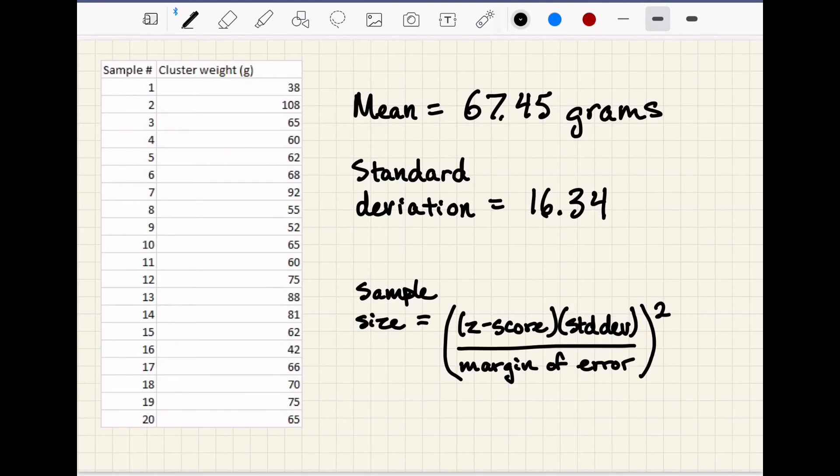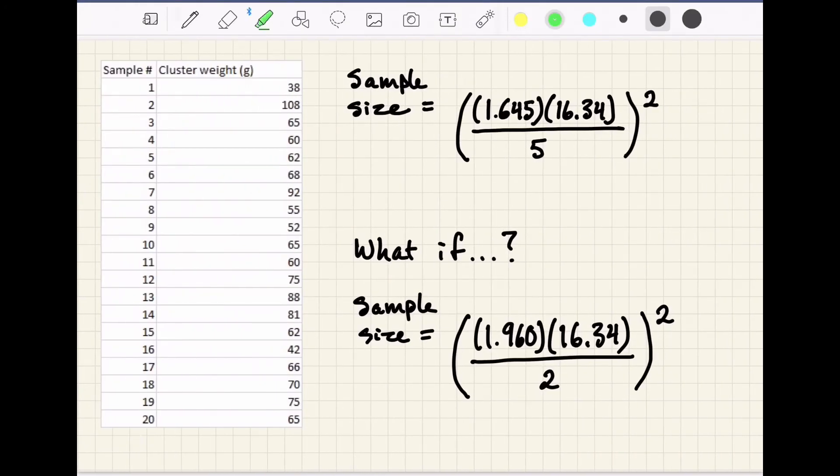So now we plug those numbers into our equation. That makes our required sample size equal to 1.645, which is our z-score, times 16.34, which is our standard deviation based on the samples we collected, over the margin of error, all squared. I decided my margin of error was plus or minus 5 grams for my average cluster weight. If we do that calculation, we get a required sample size of 28.9. Since we've already collected 20 samples and presumably we did a good job of representative sampling in terms of unbiased collection, cluster position, sunlight exposure, and all of those things, then we just need another nine clusters using the same good sampling protocol. And then we'll have met the parameters we set for ourselves in terms of our confidence interval and our margin of error based on the level of variability that we saw in the cluster weights.